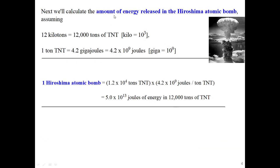The first calculation is the energy released in a Hiroshima-sized atomic bomb. The Hiroshima bomb is considered about 12 kilotons of TNT — that's 12,000 tons. One ton of TNT is 4.2 gigajoules, which is 4.2×10⁹ joules. We have 1.2×10⁴ tons times 4.2×10⁹ joules per ton, giving us 5×10¹³ joules of energy — the size of the Hiroshima atomic bomb.